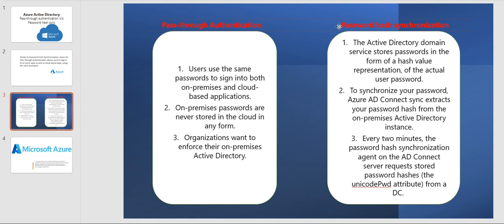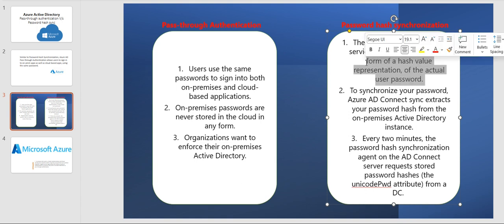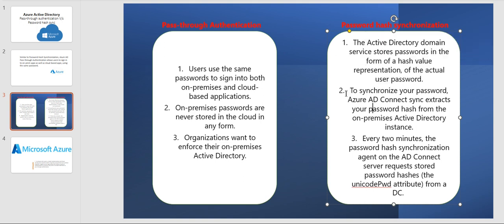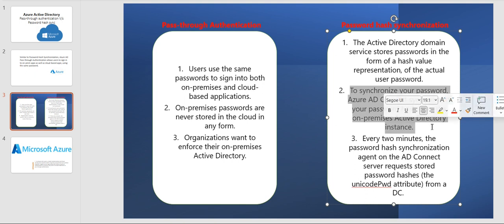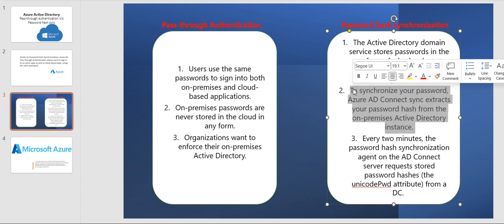With password hash synchronization, it uses the same password for on-premise and cloud, but Active Directory Domain Services stores the password in the form of a hash value representation in the cloud. Azure AD Connect Sync extracts your password hash from the on-premise Active Directory instance using an encryption method. The password is not saved as-is — it is saved in the form of a hash value.